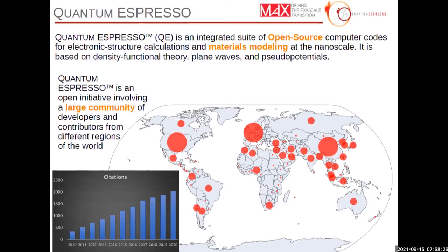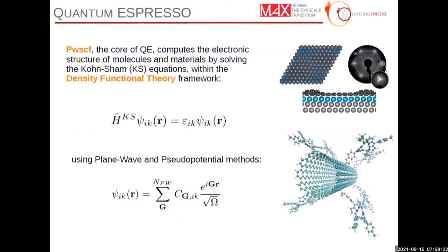We were surprised that it is really a broad community coming from all around the world. From a scientific and technical point of view, Quantum ESPRESSO computes the electronic structure of molecules and materials. This is done within the density functional theory framework by solving a set of Kohn-Sham equations. In these equations, the wave function is expanded using plane waves and pseudo-potential methods. The core part of Quantum ESPRESSO — maybe the most important sub-program — is PWSCF, which solves the Kohn-Sham equations.